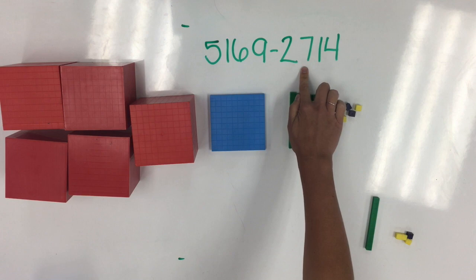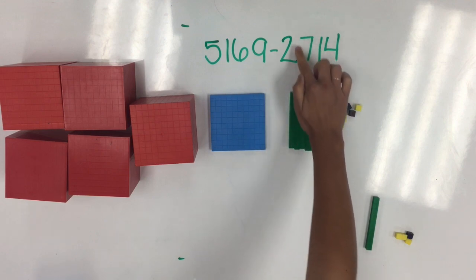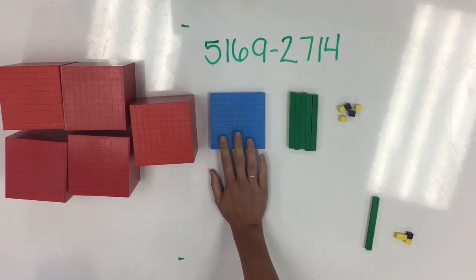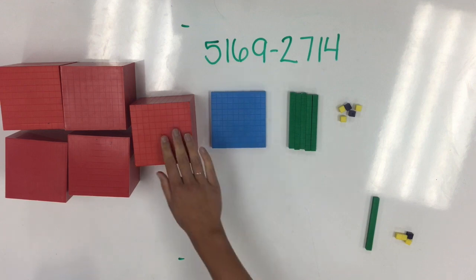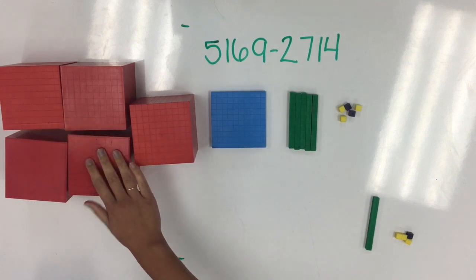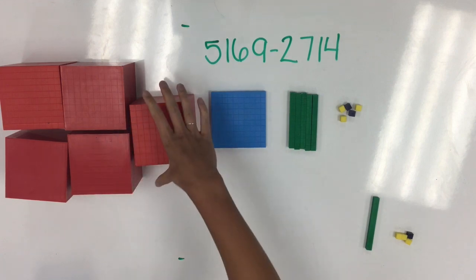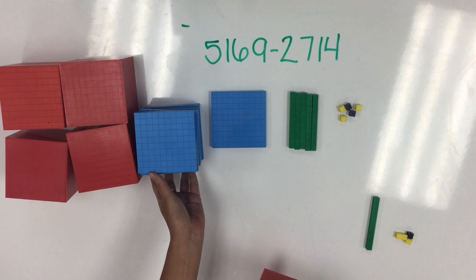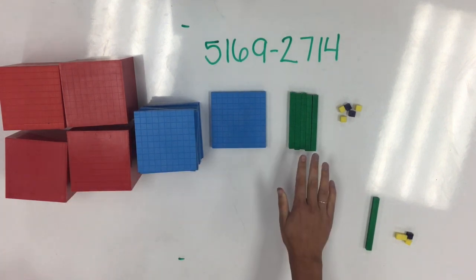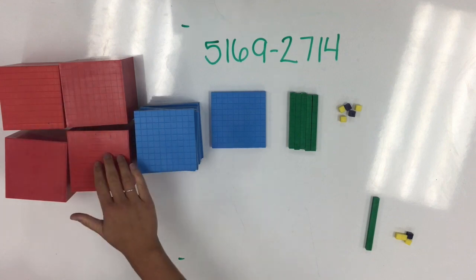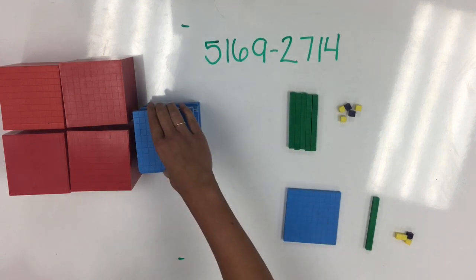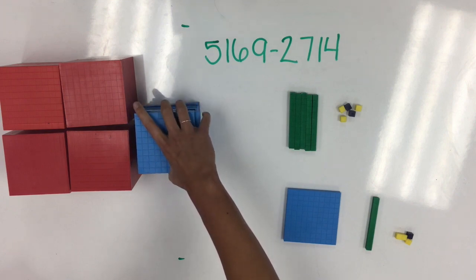Next, we need to move to the hundreds place. It's asking me to take away 7 hundreds. But, as you can see from our starting number, I only have 100 here. But, as we know from our knowledge of place value and from our exchanging in addition, we know that within each group of 1,000 there are actually 10 groups of 100. So, what I can do is switch out one group of 1,000 for 10 groups of 100. My number hasn't changed — I still have 1, 2, 3, 4, 5 thousands — but now it's much easier for me to take away 7 hundreds: 1, 2, 3, 4, 5, 6, 7.